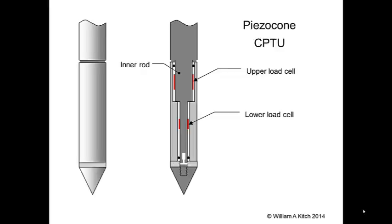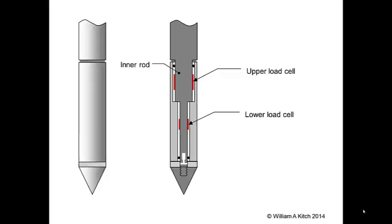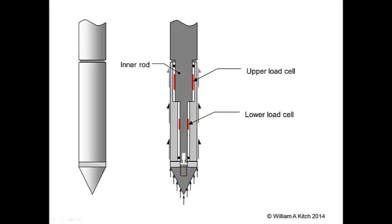In addition to the load cells, the probe contains a pressure transducer to measure the pore pressure. When the probe is pushed into the ground, the cone must push the soil out of the way as the probe advances. The soil imparts a vertical load on the end of the cone as it is pushed out of the way. The cone transfers this end bearing load to the inner rod. Because the load is applied at the end of the shaft, both load cells measure this end bearing force. The soil at the side of the probe imparts a shear force along the outside of the friction sleeve. The friction sleeve transfers this side friction to the inner rod at the shoulder where the friction sleeve and the inner rod meet. Therefore, the friction force is measured only by the upper load cell.